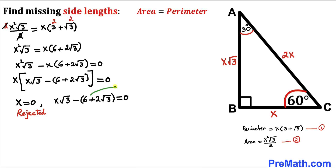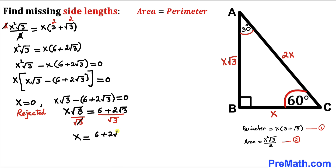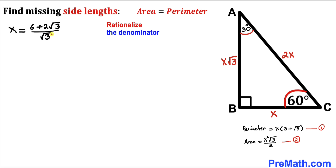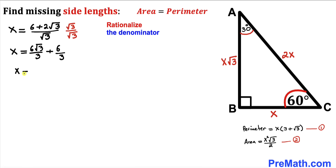Moving the constant term to the right side and dividing both sides by square root of 3 to isolate x, we get x equals (6 plus 2 times square root of 3) divided by square root of 3. Rationalizing the denominator by multiplying numerator and denominator by square root of 3: square root of 3 times square root of 3 gives 3. Distributing and simplifying, our x value turns out to be 2 times square root of 3 plus 2.